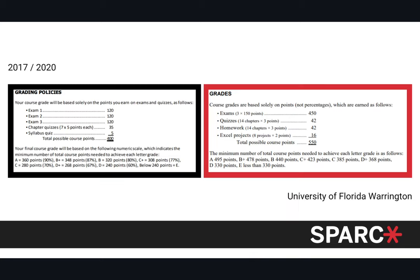Here's an example of a grade breakdown from a University of Florida Warrington class. Beforehand, the syllabus had three exams, a chapter quiz, and a syllabus activity. Afterward, there are still three exams and quizzes, but a new category of homework was added — 14 chapters at three points each, totaling 42 points. This class became approximately 11% reliant on purchasing that textbook.